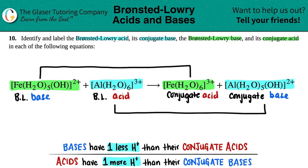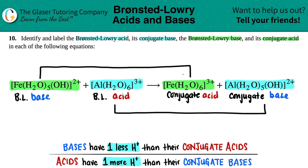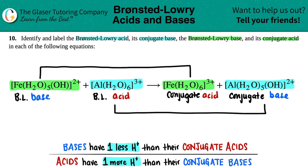And if you've noticed, there's only one acid and one base per side — on the reactant and the product. So if you see on a quiz or test that you have two bases on one side or two acids on one side, just stop and go back, because you're only allowed one of each. That's a good check.